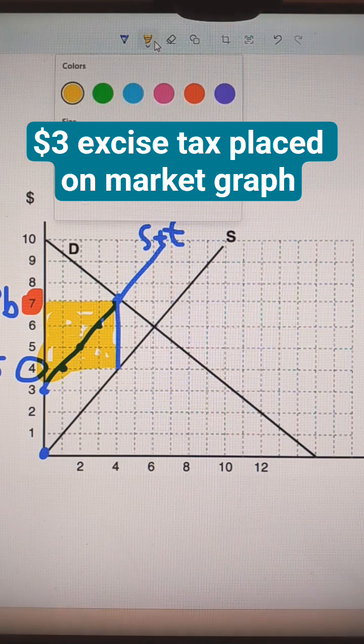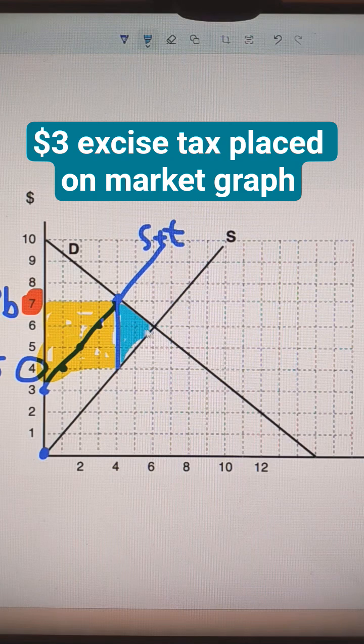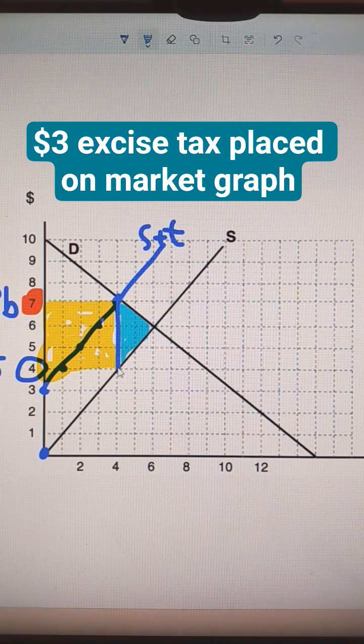And then finally, the deadweight loss is going to be the area of loss to consumer surplus, which is that top part, and the loss to producer surplus.